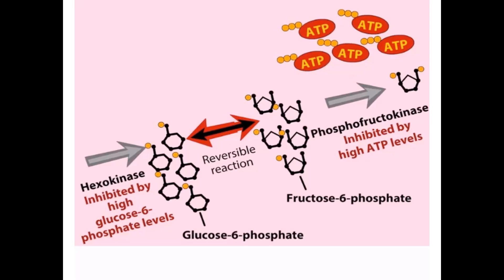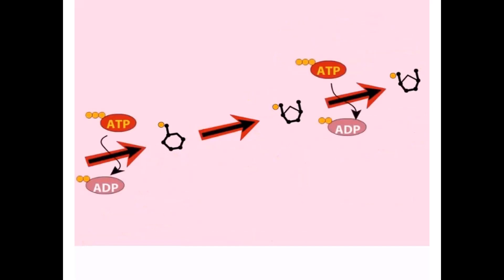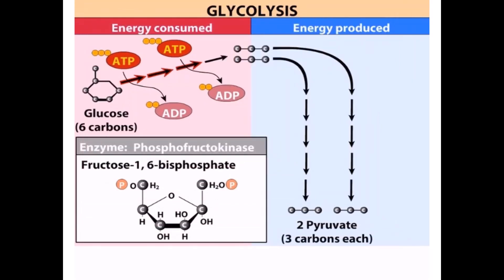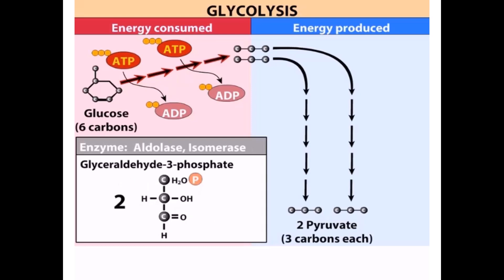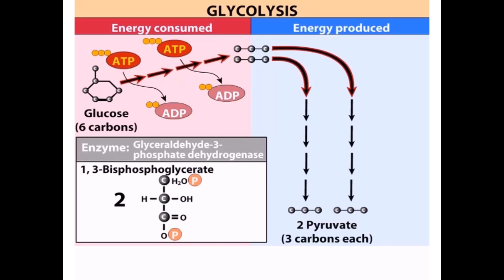Cleavage of fructose 1,6-bisphosphate produces two molecules of the three-carbon sugar glyceraldehyde 3-phosphate. Glyceraldehyde 3-phosphate is oxidized to 1,3-bisphosphoglycerate. In the process, two molecules of NADH are produced. One of the phosphate groups of 1,3-bisphosphoglycerate has a very high free energy of hydrolysis, so it is used in the next reaction of glycolysis to drive the conversion of ADP into ATP. The resulting compound is 3-phosphoglycerate.